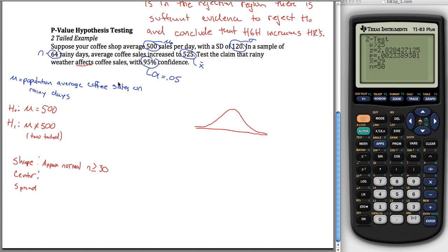Center, just like above, our center is going to be mu naught. And just like above, what's really going on here is our center is mu, but we're assuming our null hypothesis is correct. We're assuming that mu equals 500. So because of this 500 value right here, we're going to put our center here at 500.